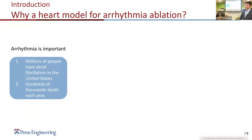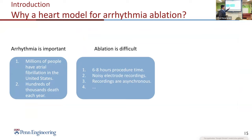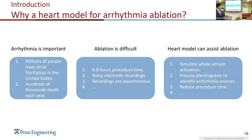The current mapping system is very advanced, so why do we need a heart model? Because atrial fibrillation affects millions and causes hundreds of thousands of deaths. Ablation is also difficult — the procedure usually runs six to eight hours, electrograms can be noisy, and recordings are not synchronous. Our heart model can assist ablation by simulating whole atrial activation and processing electrograms to identify arrhythmia sources, thereby reducing procedure time.